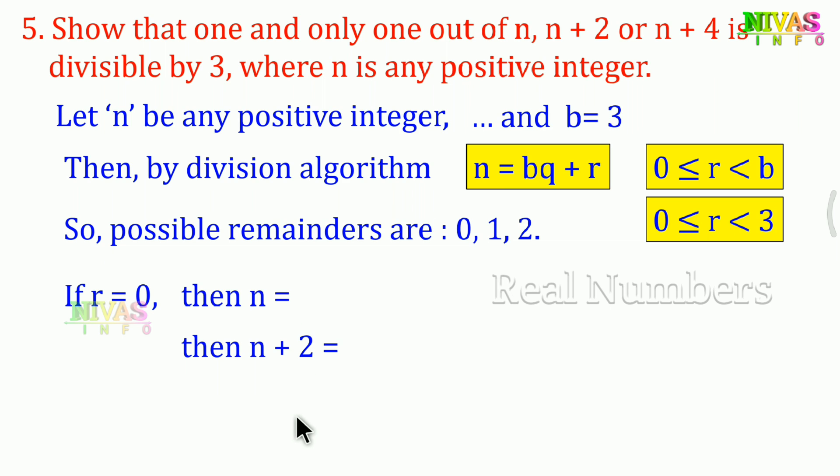First, if remainder is 0, then n = 3q. For n: if n = 3q, it's divisible by 3 with zero remainder.